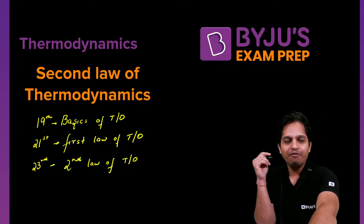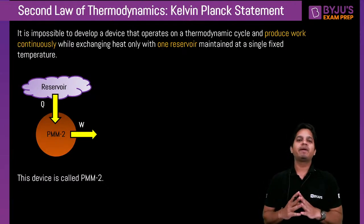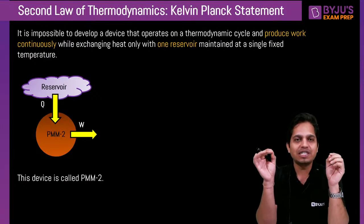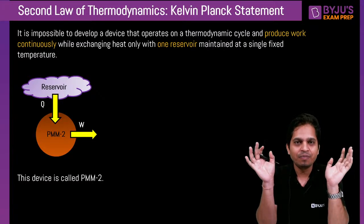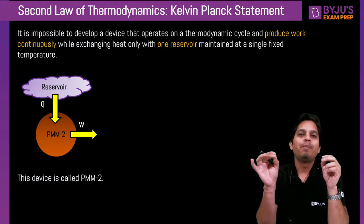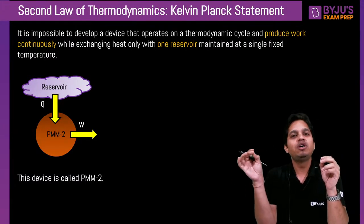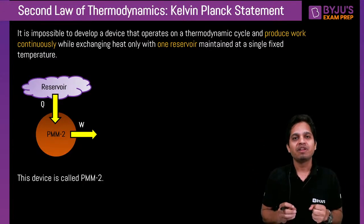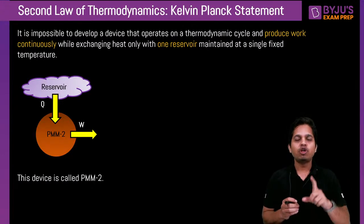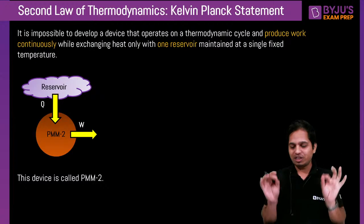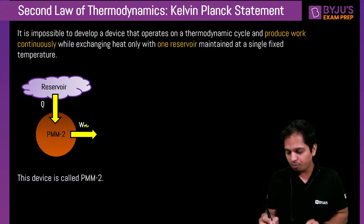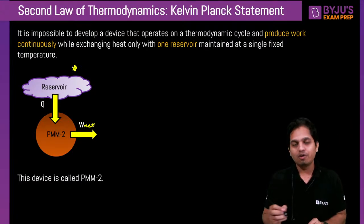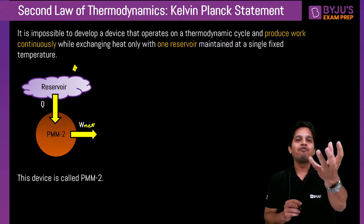The second law of thermodynamics has two statements: Kelvin-Planck statement and Clausius statement. Kelvin-Planck's statement gives you PMM-2 — Perpetual Motion Machine 2. PMM-2 is a machine that can work continuously while exchanging heat with only one reservoir. So that is PMM-2: it gives you work output by interacting with only one reservoir.